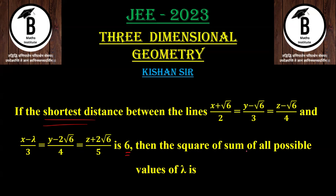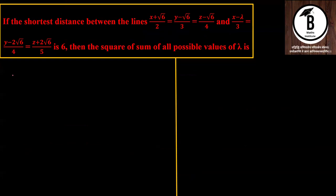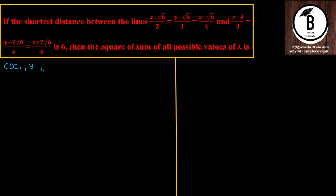So we need to find out the shortest distance. Let's write down what is given. Here we identify x₁, y₁, z₁ from the first line equation.